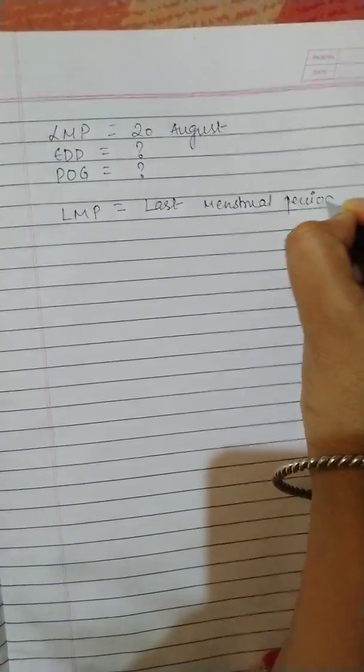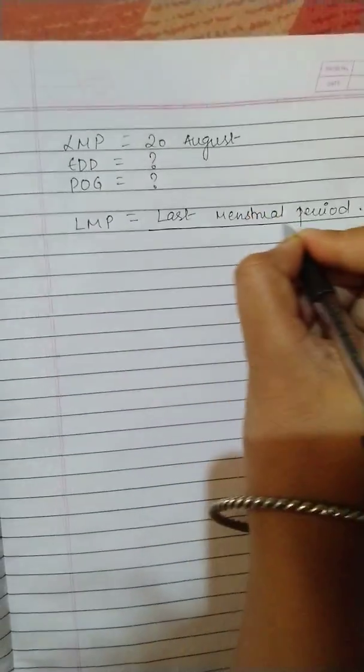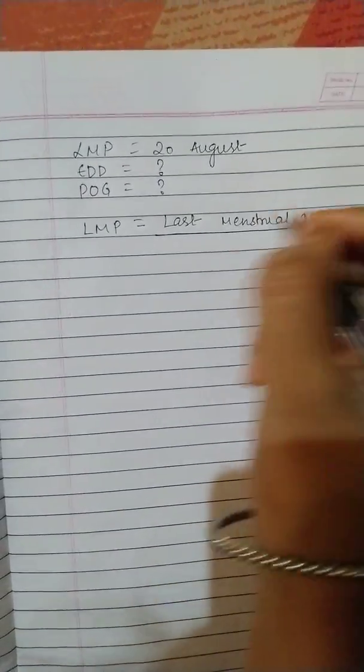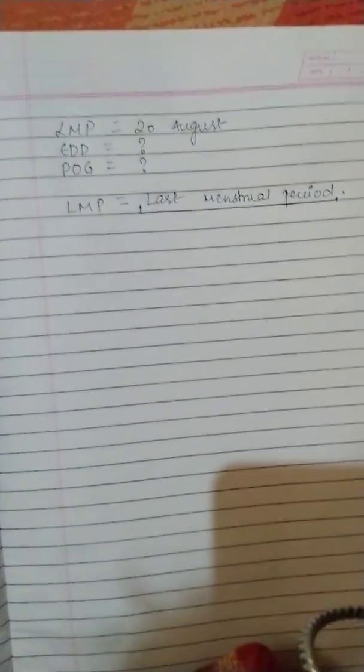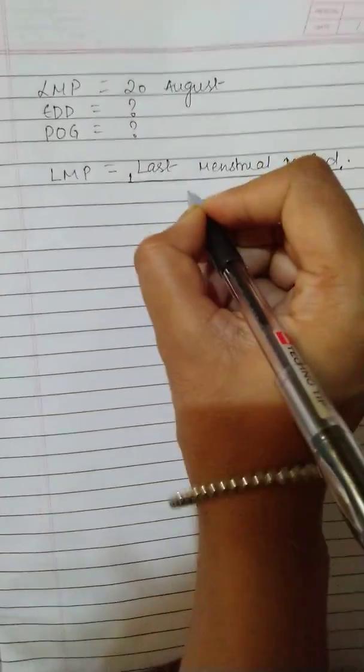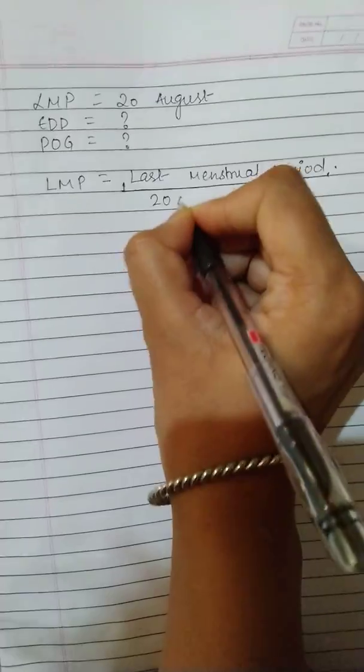Simply calculate. So what is LMP? It is nothing but last menstrual period. This is the date when a lady who is pregnant will say that I have got my last period on this date.